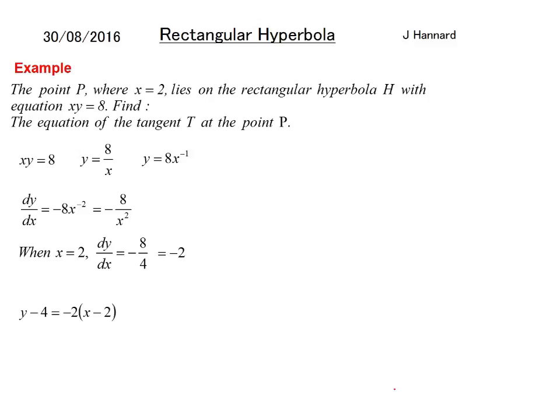y minus b equals mx minus a. Expand. Tidy up. If you're wondering where that minus 4 came from it's just animated in the wrong order. When x equals 2, y equals 4 because we'll just put it back through this. What do you times 2 by to get 8? That's going to be 4. Tidy up and make it positive and you get y plus 2x equals 8. And that is the equation of the tangent t at the point p.